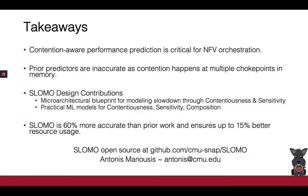These final remarks conclude my talk. Contention-aware performance prediction is critical for NFV orchestration, and while prior work has offered invaluable insights into the mechanisms of contention, existing predictors cannot capture all facets of memory contention and thus prove to be inaccurate. In our work, we observe that contention happens independently at multiple choke points in the memory subsystem, and leverage this finding to design SlowMo, a contention-aware performance predictor. SlowMo draws inspiration from a micro-architectural blueprint for modeling slowdown through contentiousness and sensitivity, and uses practical ML to capture these properties. SlowMo is 60% more accurate than prior work and ensures up to 15% better cluster resource utilization. You can find the code online, and I'm looking forward to answering your questions.